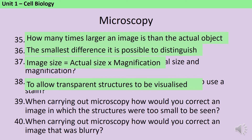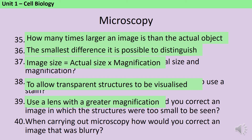If an image was too small to be seen, you would need a lens that was more powerful and could magnify things more. If you were trying to correct an image that was blurry, then you would need to focus it.